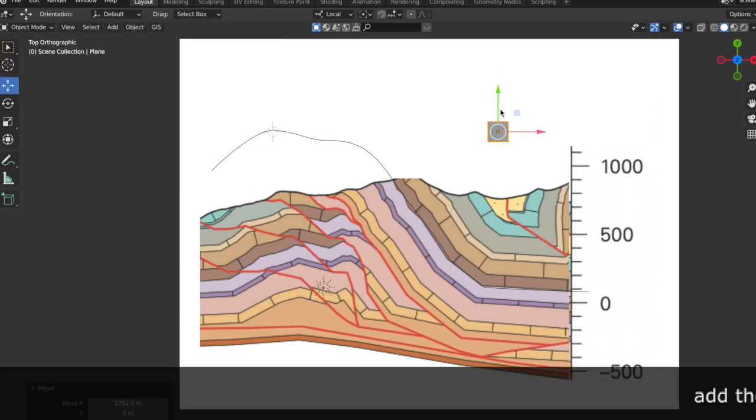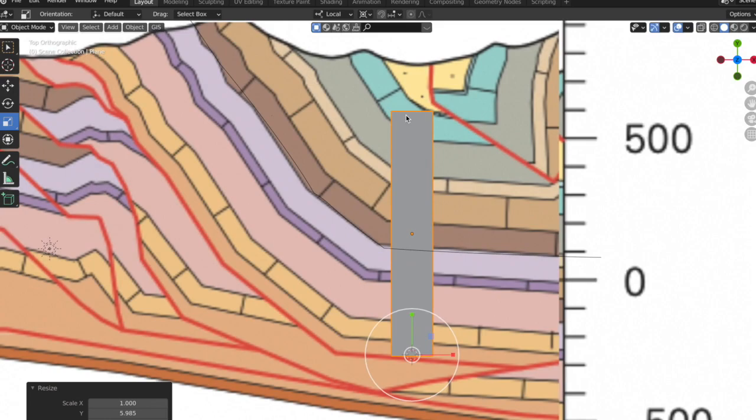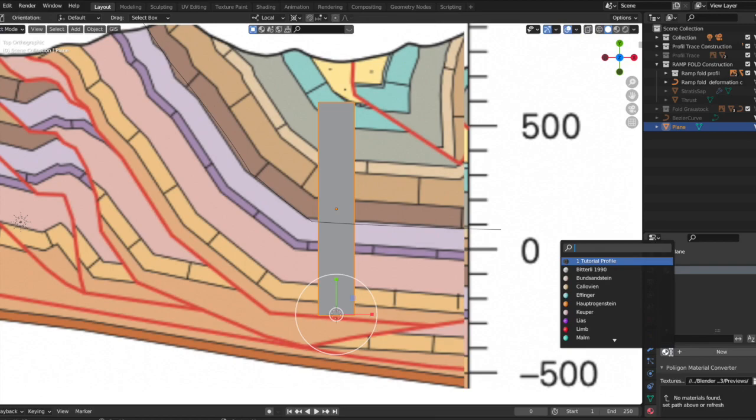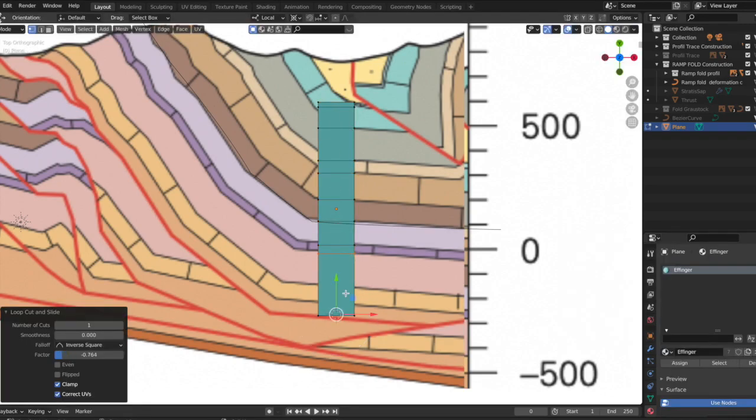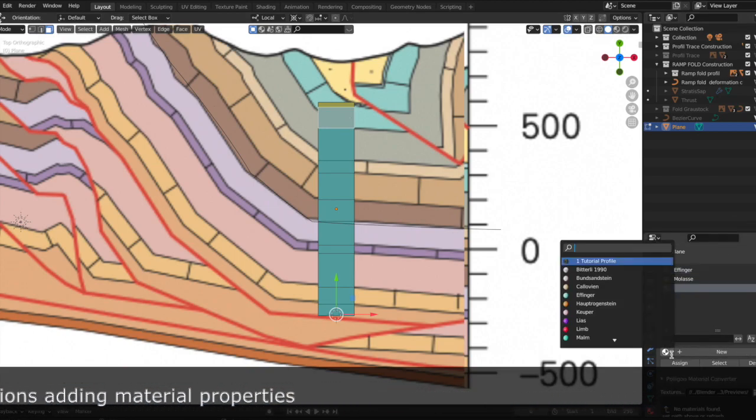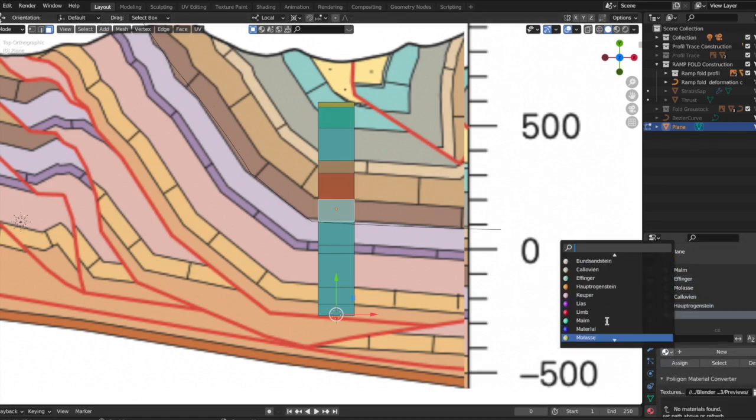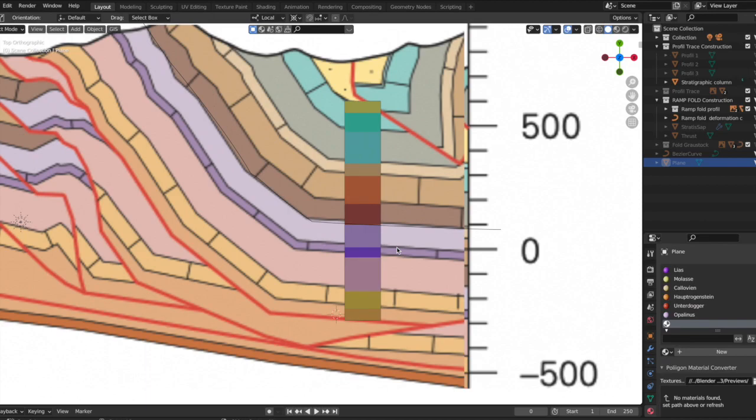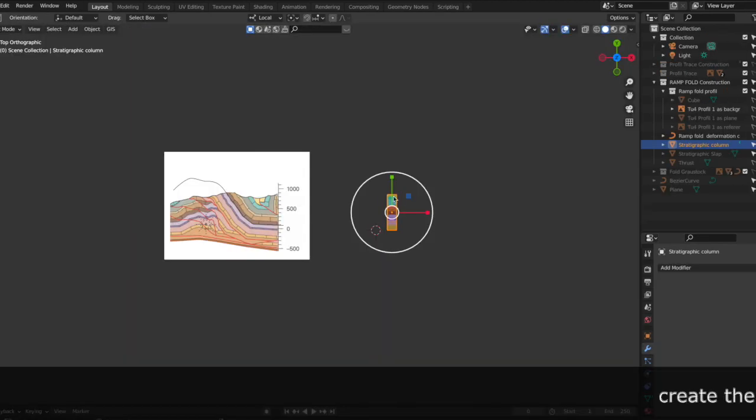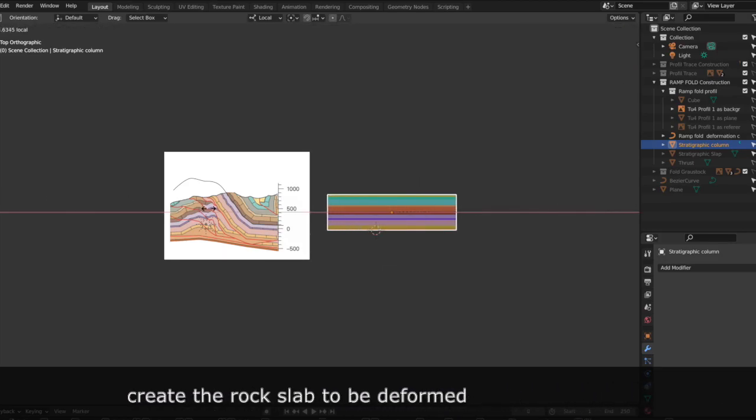This done, add the rock column, go into edit mode and subdivide it further in as many rock units as required and assign colors to each rock unit. Form now a large rock slab using the scaling pivot and subdivide the slab further in edit mode.